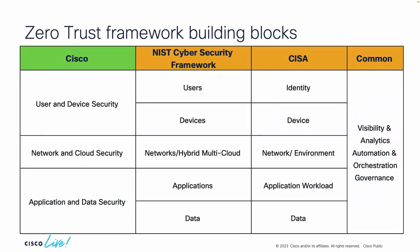There are five main pillars that this standard describes: users, devices, network, applications, and data. At Cisco, we looked at this framework and simplified it a little by combining some of these pillars together, looking at how we can lay Cisco technologies on top of the standard and how things work together. The principles are the same — you still have to maintain visibility, use analytics and automation and orchestration to achieve zero trust outcomes across all pillars.